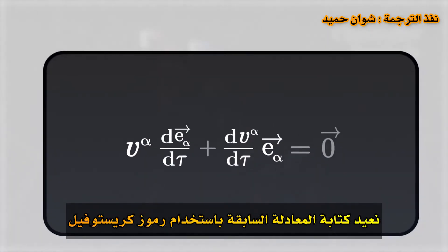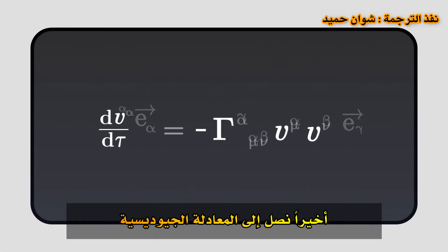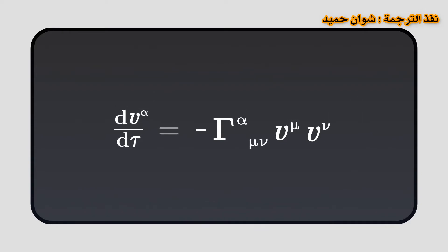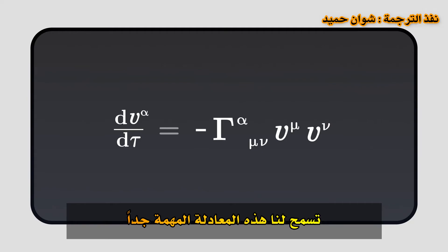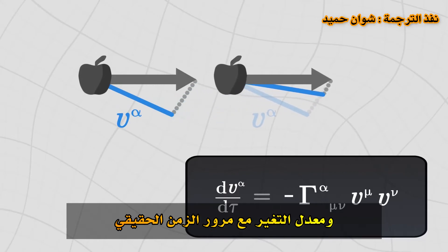Rewriting the previous equation using Christoffel symbols, we finally get to the geodesic equation. This very important equation allows us to calculate for each component of the velocity, its rate of change as proper time passes.